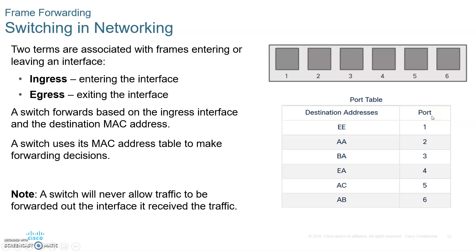By the way, we sometimes call this CAM — C-A-M — which stands for Content Addressable Memory. So sometimes we write this as CAM or MAC address table. Number four, after we place EE at port 1, the switch is going to inspect the destination MAC address of this incoming frame. It's going to look up the destination MAC address AC in the MAC address table.